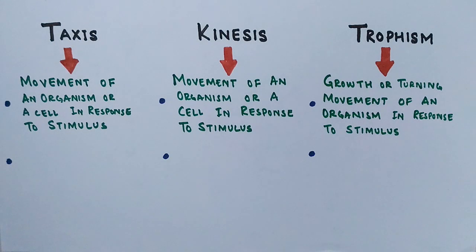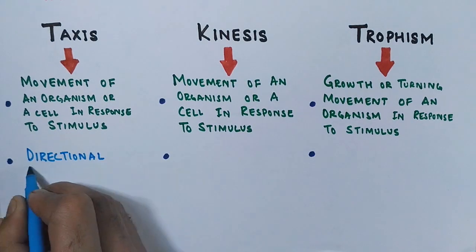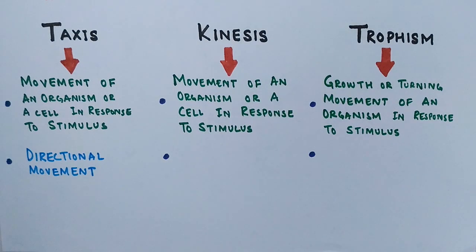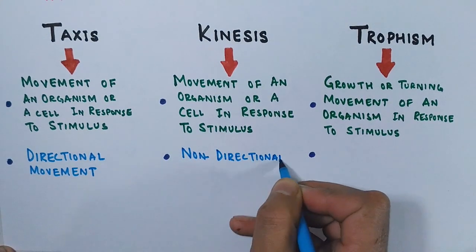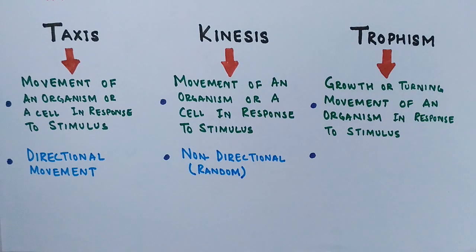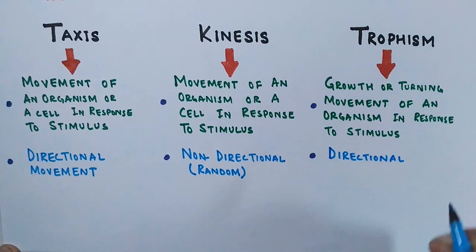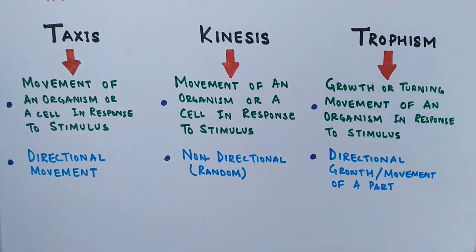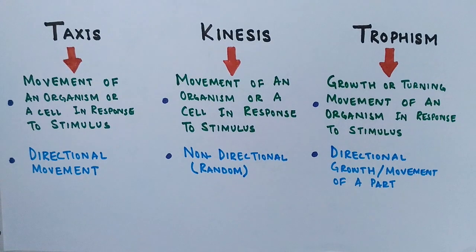On the basis of direction, taxis is a directional movement, whereas kinesis is a non-directional movement — involving increases, decreases, or stops between gradients. Taxis involves forward, backward, left, or right motion, so it is directional. Tropism is also a directional movement like taxis, but it involves growth movement only.